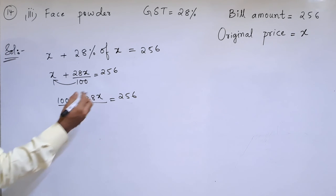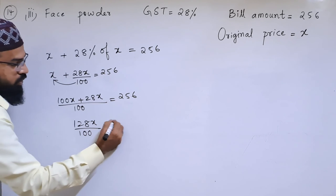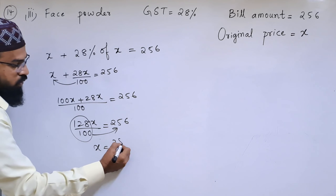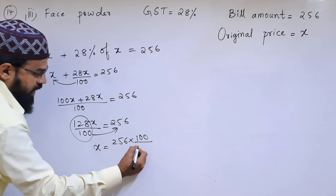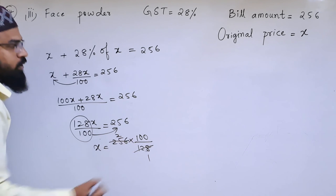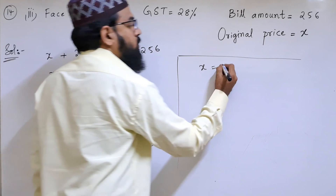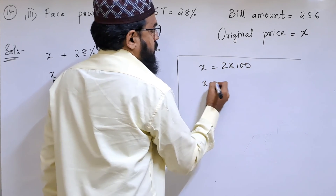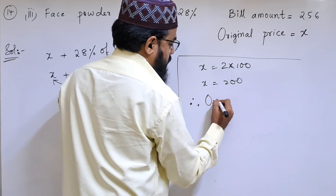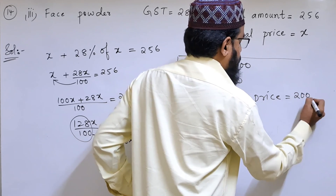Sending 100 to the other side: x equals 256 into 100 by 128. Simplifying, 256 divided by 128 equals 2, so x equals 2 into 100, which is 200. Therefore, the original price is ₹200.